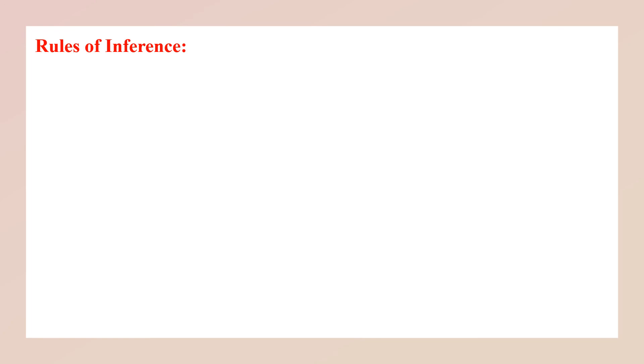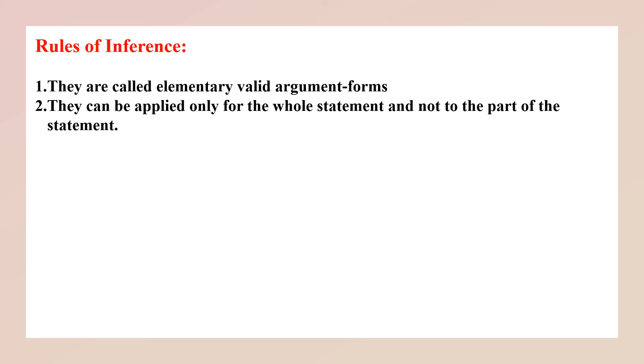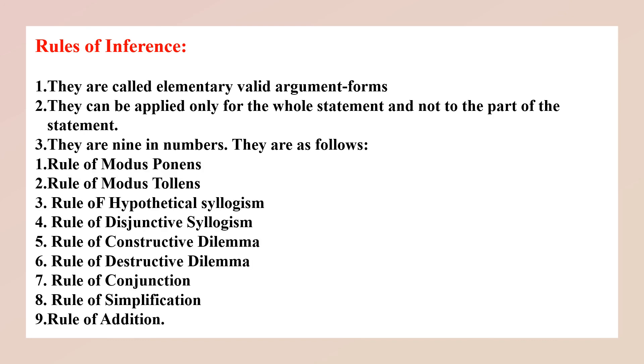Now, we come to the rules of inference. They are called elementary valid argument forms. They can be applied only for the whole statement and not to the part of the statement. They are nine in number. They are as follows: